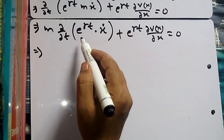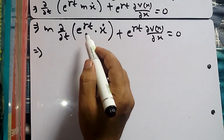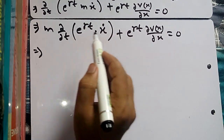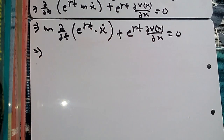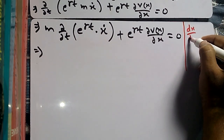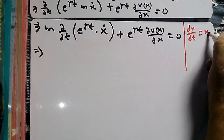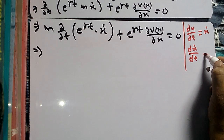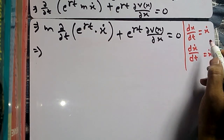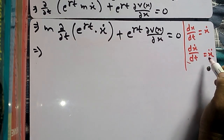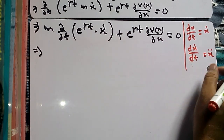Now we apply the product rule to d/dt of [e^(gamma t) times x-dot], because e^(gamma t) is a function of time and x-dot is also a function of time. We know that dx/dt = x-dot and d(x-dot)/dt = x-double-dot, so x-dot is indeed a function of time and is differentiable, giving x-double-dot.